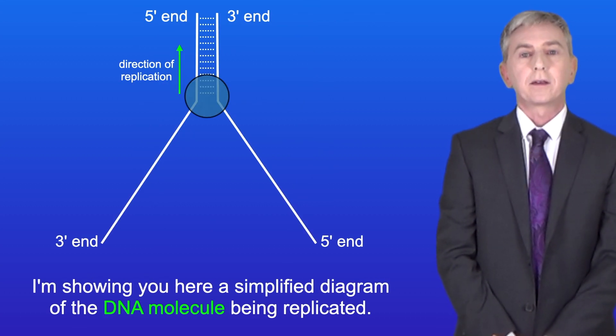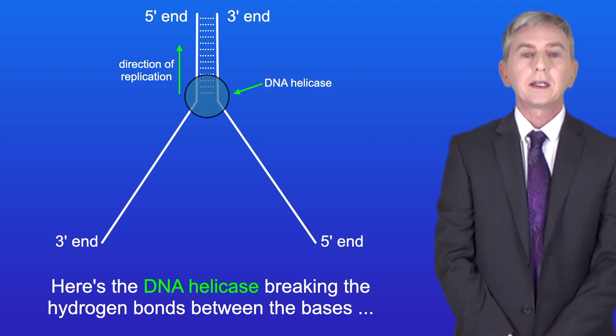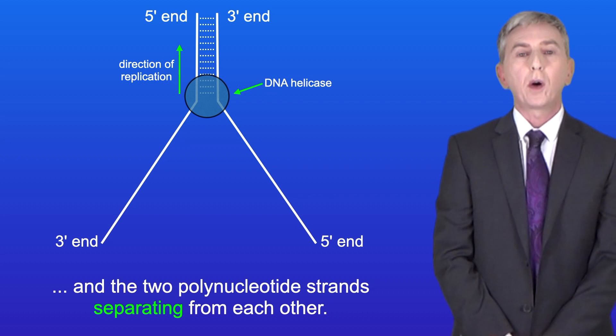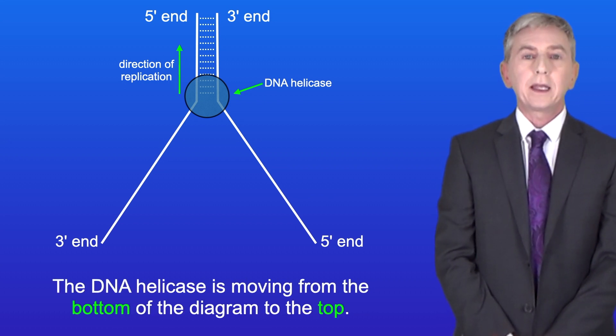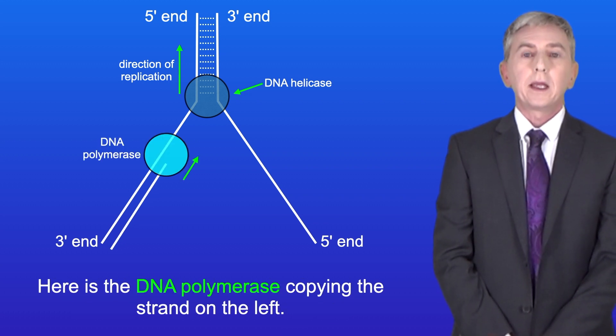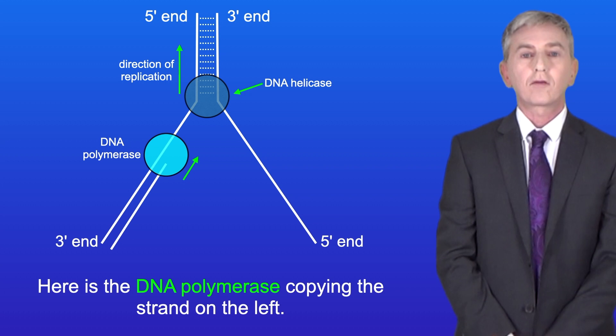I'm showing you here a simplified diagram of the DNA molecule being replicated. So here's the DNA helicase breaking the hydrogen bonds between the bases and the two polynucleotide strands separating from each other. The DNA helicase is moving from the bottom of the diagram to the top. Here's the DNA polymerase copying the strand on the left.